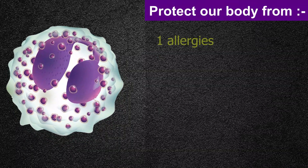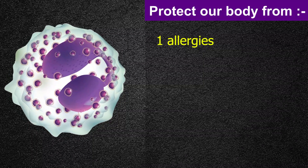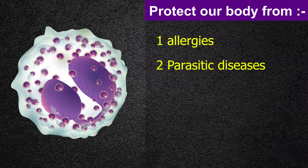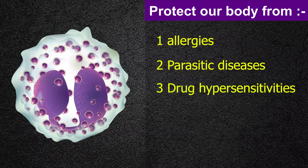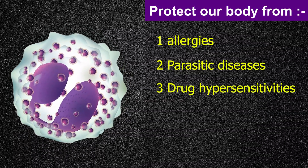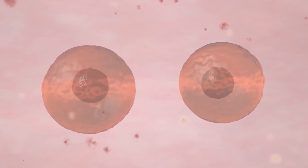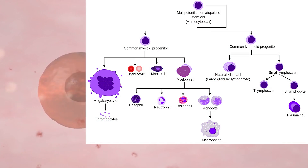Eosinophils are a type of white blood cells which help to protect our body from allergies, parasitic diseases, and drug hypersensitivities. Eosinophils are a type of granulocytes that develop during hematopoiesis.